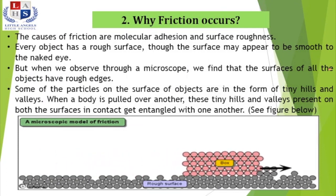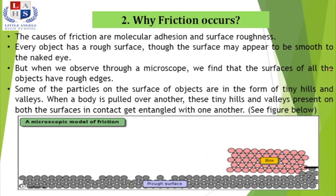We have discussed what friction is and how it behaves. Now we will discuss why friction occurs. The two major reasons are: first, molecular adhesion — a particular intermolecular force which causes solids or liquids to adhere or stick to each other. The second reason is surface roughness. When we observe a surface through a microscope, we find that all objects have rough edges in the form of tiny hills and valleys. As seen in the animated image, when a body is pulled over another, these tiny hills and valleys on both surfaces in contact get entangled with each other.